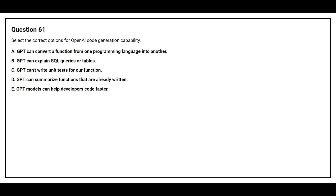Option 61: Select the correct options for OpenAI code generation capability. Option A: GPT can convert a function from one programming language into another. Option B: GPT can explain SQL queries or tables. Option C: GPT can't write unit tests for our function. Option D: GPT can summarize functions that are already written. Option E: GPT models can help developers code faster. The correct answers are A, B, D, and E.